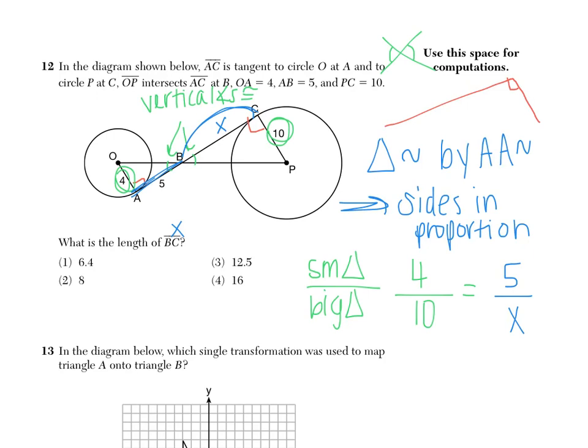Where I have AB corresponding to BC. I'm sorry, AB corresponding to CB. So here to solve proportions, we just cross multiply. 4X equals 50. When we divide by 4, we get 12.5. Choice 3.